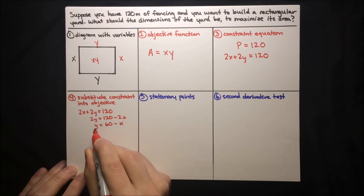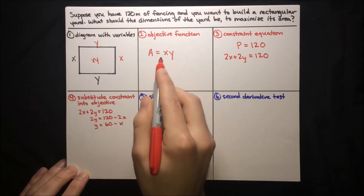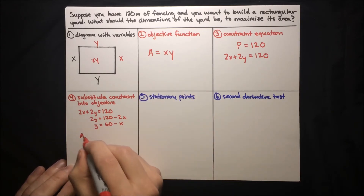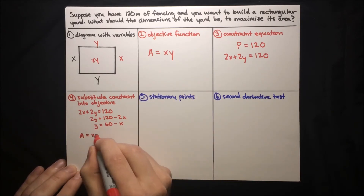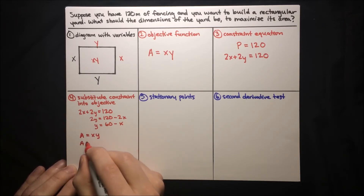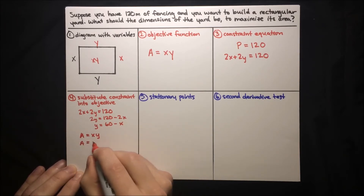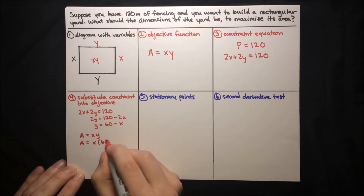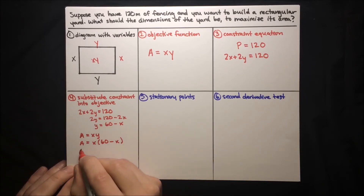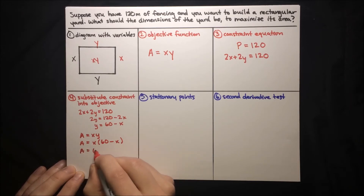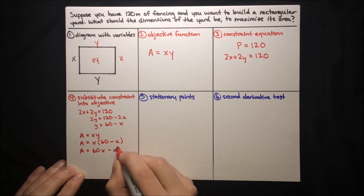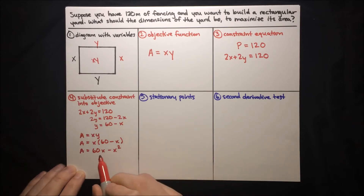Now we can plug that into our objective function. Our objective function is area equals x times y. When we plug this in, we get area equals x times (60 minus x). Expanding that out, area equals 60x minus x squared.